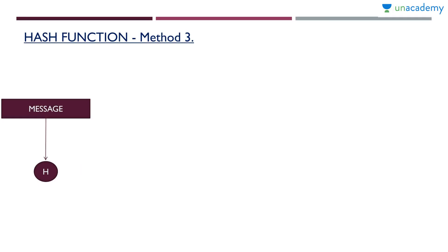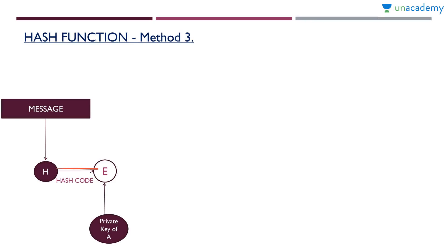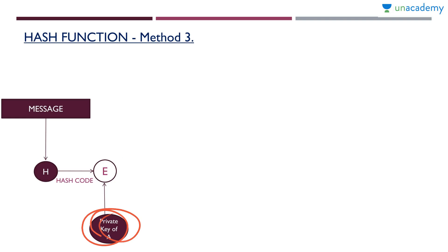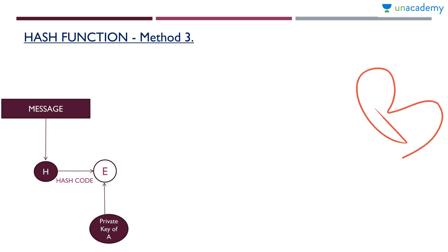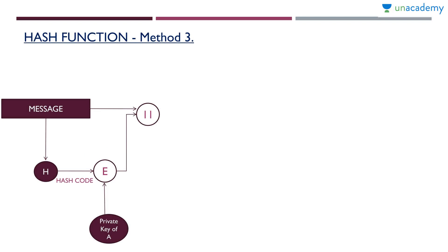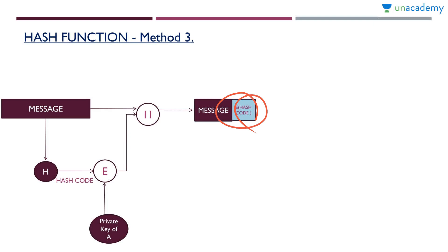Now let us see the next method. We'll have the message and apply it to the hash function to get a hash code. Now we'll take this hash code and encrypt it using the private key of A. See the difference — the previous two methods used symmetric encryption with the same key, but here it is asymmetric or public key encryption. So we apply A's private key plus the hash code to an encryption algorithm to get an encrypted hash code. Then we append the message with this encrypted hash code and send it to the receiver.